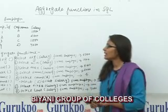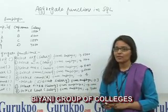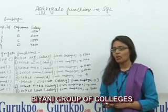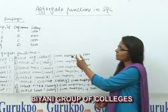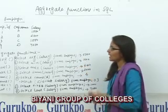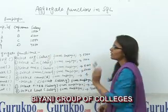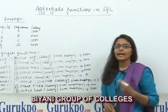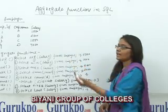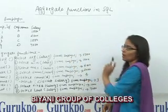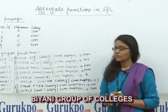Now we will understand what is average. The average function returns the average of the values of a column. For example, the query is SELECT AVG(column_name) FROM table_name. It will calculate the average of all values of the salary column and return the result as 2000.